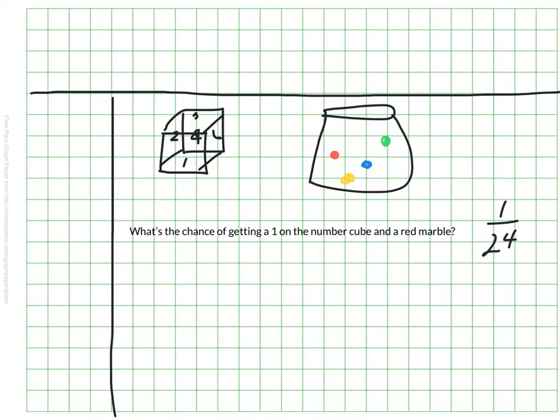How would you do? Did you get one out of 24? There are a couple ways to think about it. One is that we know that there are six equally likely outcomes for the number cube and four equally likely outcomes for the marbles. So there are 24 total outcomes, and there's just one way to get a one and a red. So the probability is one out of 24.